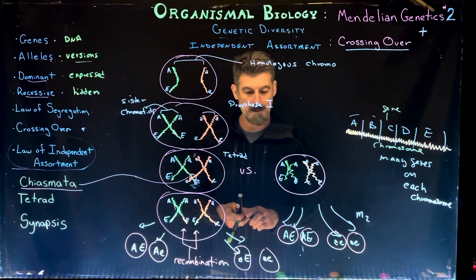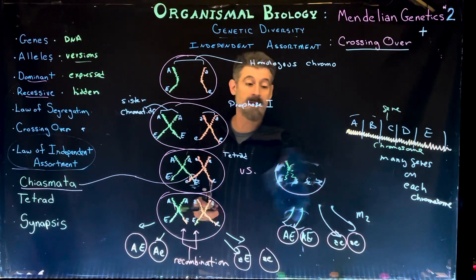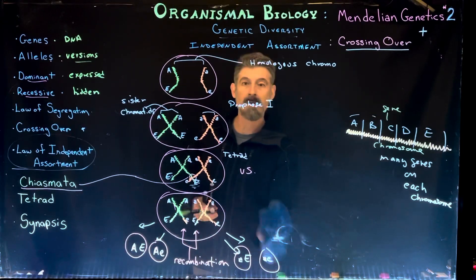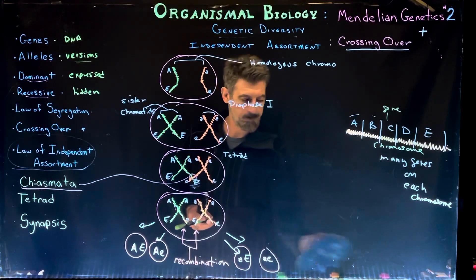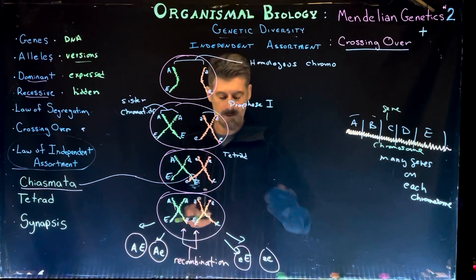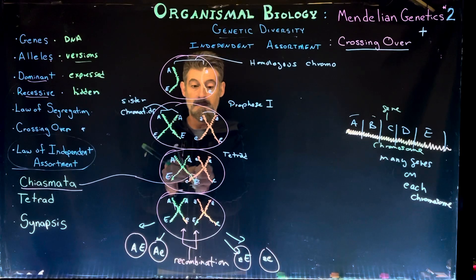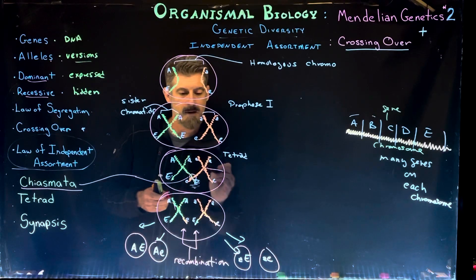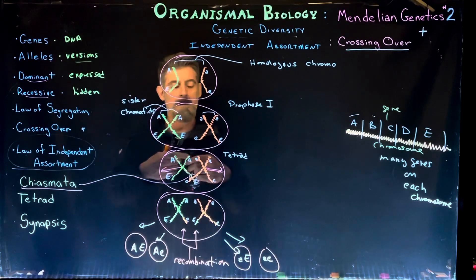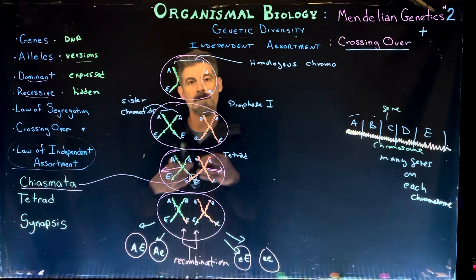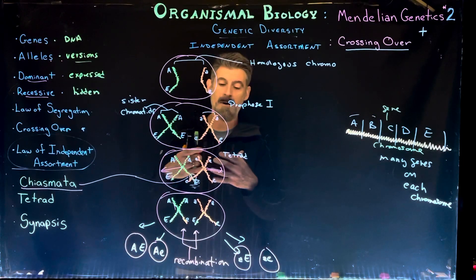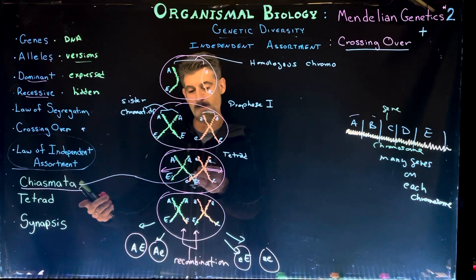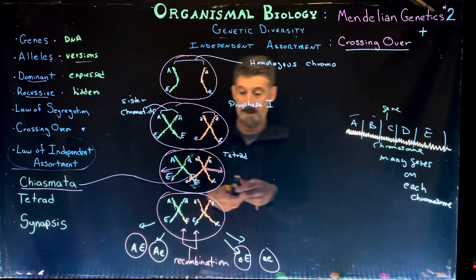Keep in mind that crossing over actually has to occur for the meiotic division to take place. There's a lot of signaling, control, and regulation of meiosis. As the fibers start to pull on the homologous chromosomes to separate them, the crossing over region creates tension — and that's actually part of the signaling. They won't actually pull apart unless there is that tension, because the chiasmata has formed and the recombination has occurred.